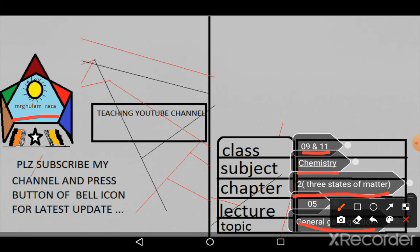This chapter is three states of matter. This is our fifth lecture. If you want to see our previous lectures on this chapter and if you want to see our next lectures on your own choice, then please subscribe to my channel and press the button of bell icon for latest updates. Thanks so much.